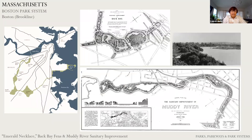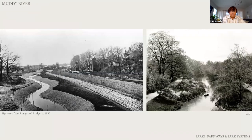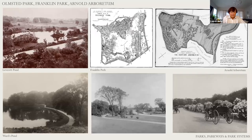Olmsted's 1879 plan for the Back Bay Fens was inspired by the tidal marshes of coastal Massachusetts. He proposed a large basin to address sanitation and periodic flooding and placed a tide gate between the basin and the Charles River to reduce the tidal fluctuation to one foot. Once the scenic characteristics, drainage, and sanitation issues were addressed, Olmsted turned to the circulation system, adding carriage drives around the boundary wall along with walking and bridle paths. Photographs of the Muddy River during construction and after show the detail of the engineering and design and the character of the planted landscape approximately 20 years after construction.